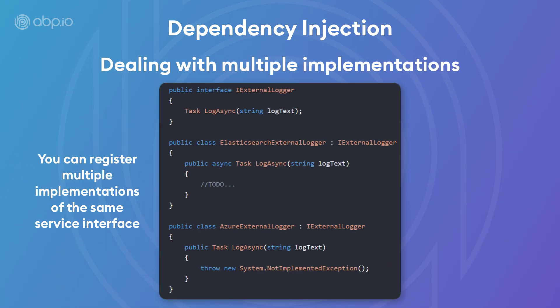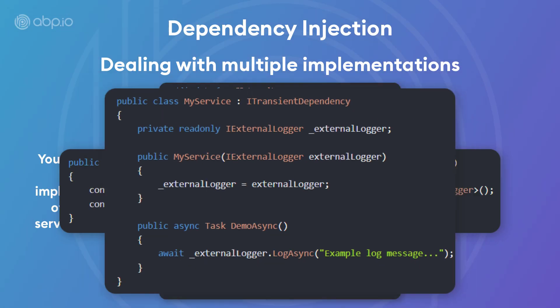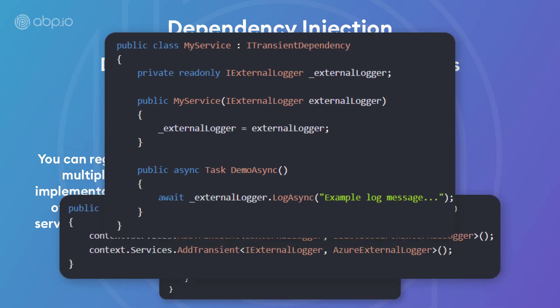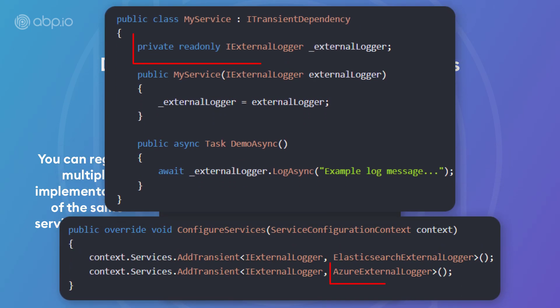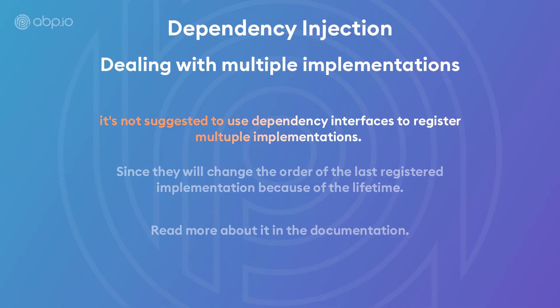For multiple implementations, you can register multiple implementations of the same service interface. Register both of them, and then try to inject this interface — the last registered implementation will be used. It is not suggested to use the dependency interfaces to register multiple implementations.